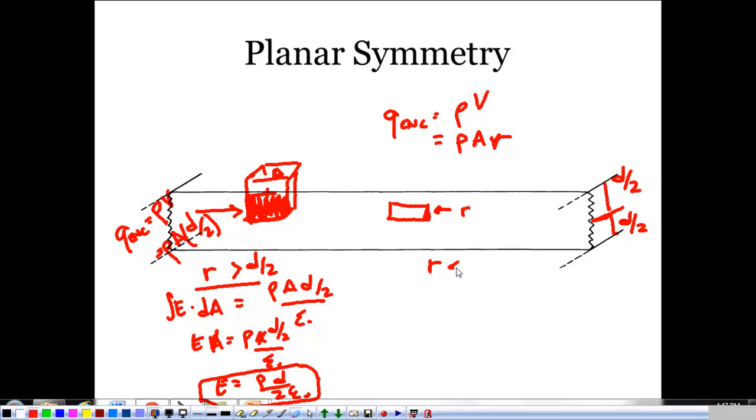When we get inside to the place where R is less than D over 2, we're going to see something similar to what we've been seeing. E dot dA is equal to my new enclosed charge, rho times A times that R over epsilon naught. So E times A, because it's constant, is rho A R over epsilon naught. The A's go away. And my electric field is rho times R over epsilon naught.